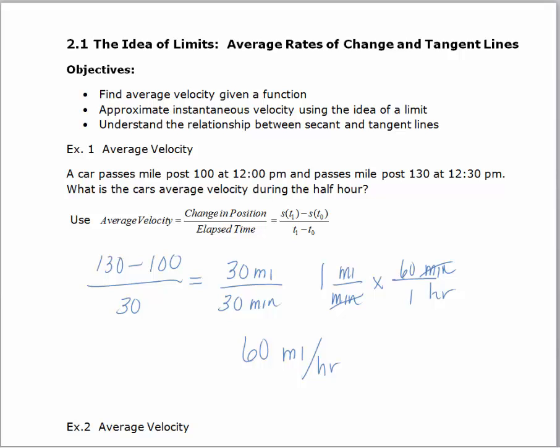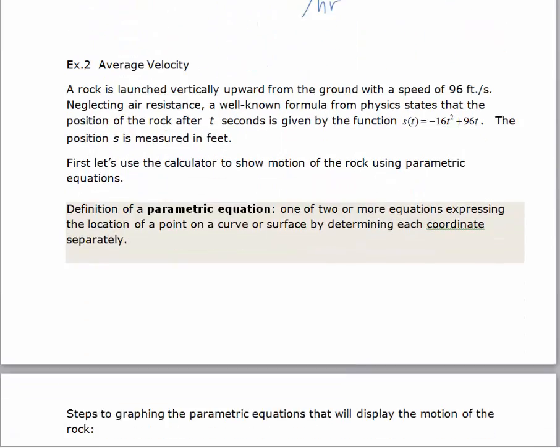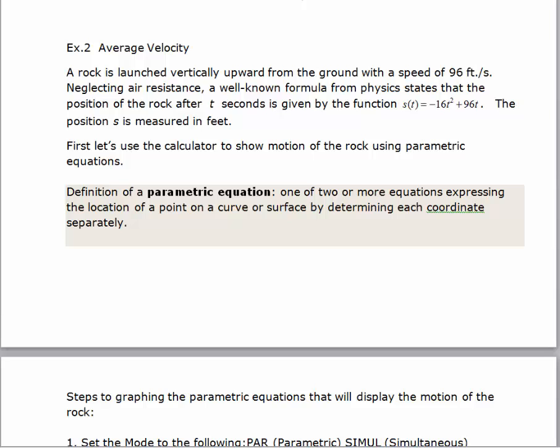The next problem involves an average velocity problem where we actually have a function to work with. We've got a rock is launched vertically upward from the ground with a speed of 96 feet per second. Neglecting air resistance, a well-known formula from physics states that the position of the rock after t seconds is given by the function s of t equals negative 16t squared plus 96t. The position s is measured in feet.